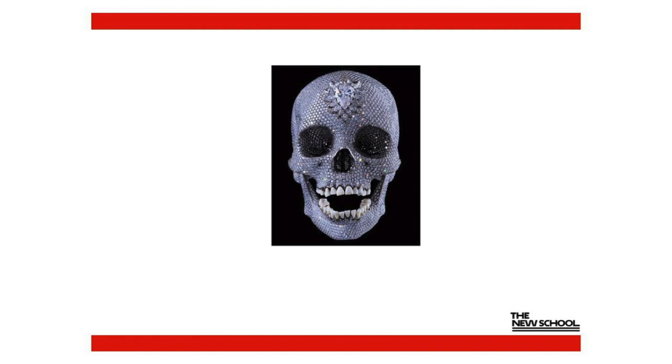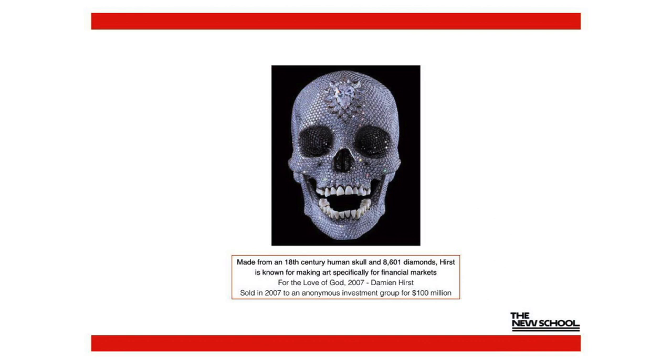This is a piece by Damien Hirst, a British artist from the late 90s. I'm curious to know if anyone can guess how much this was sold for. Raise your hand when the dollar range makes sense to you. Between $10,000 and $100,000? Between $100,000 and a million? One million to ten million? Over ten million? Well, you'd be correct — this piece sold for $100 million in 2007 to an anonymous investment group. It perfectly illustrates the state of high-valued art in the last few decades.